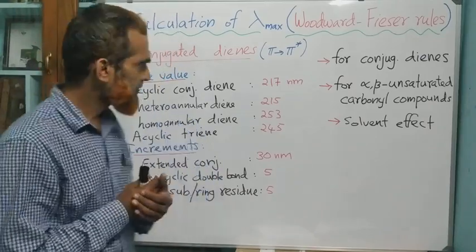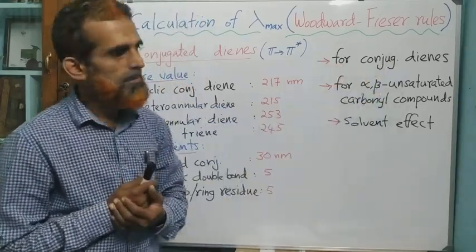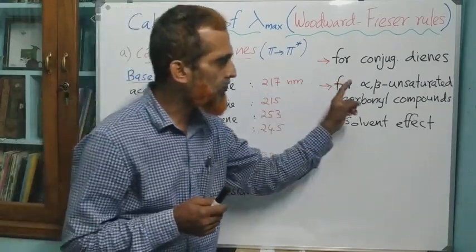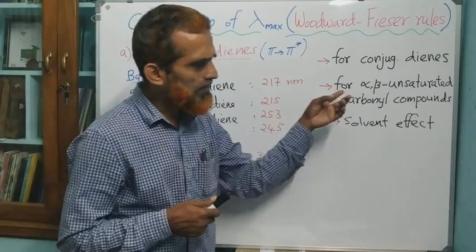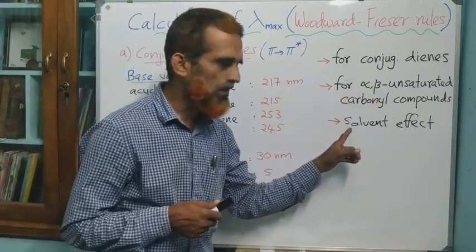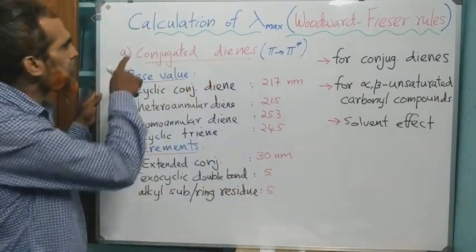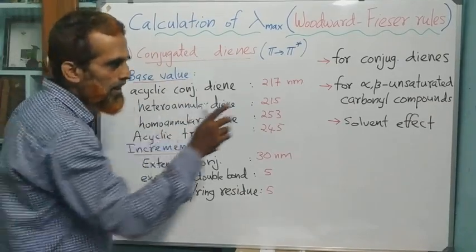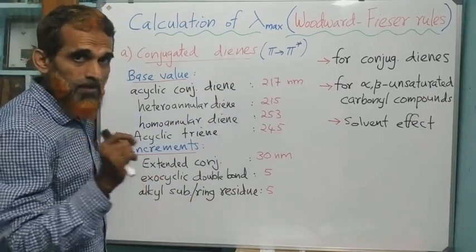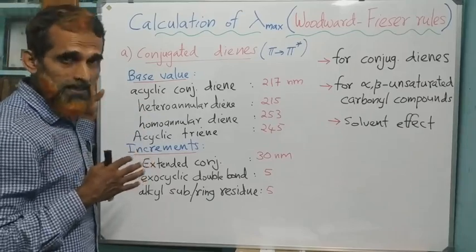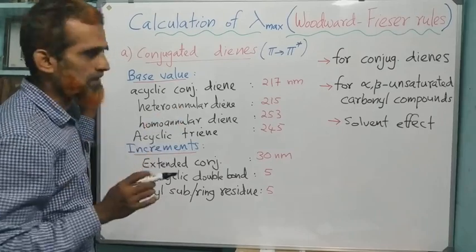We have two classes of compounds: calculation of lambda max of conjugated dienes, and calculation of lambda max of alpha-beta unsaturated carbonyl compounds, or simply enones. We also need to discuss the role of solvent — the solvent effect — on lambda max. In both cases we are concerned with pi to pi star transition, as it gives the most intense peak.